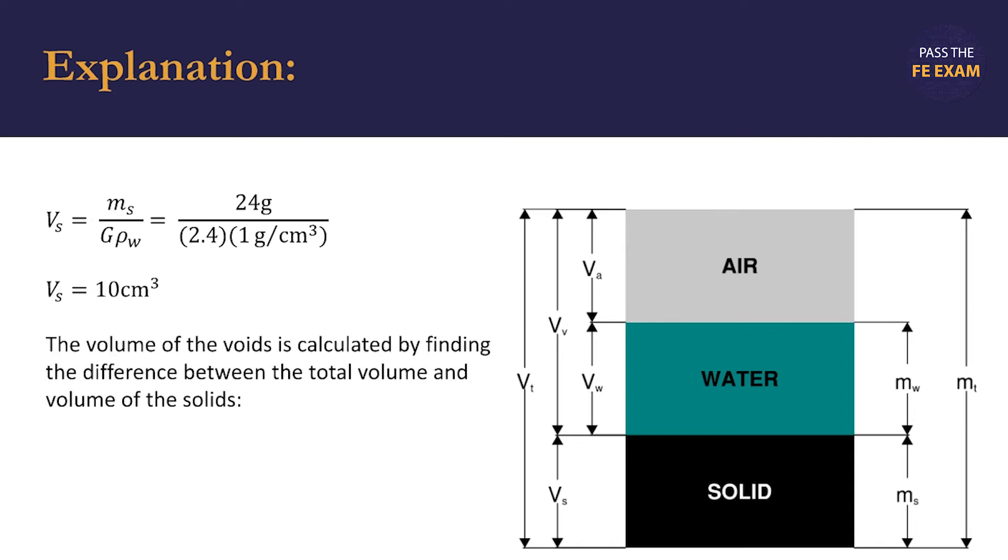And from here we can calculate the volume of the voids by finding the difference between the total volume of the soil sample and the volume of the solids. We model our equation V sub V, the volume of the voids, equal to the total volume V sub T, less V sub S, the volume of the solids that we just calculated.